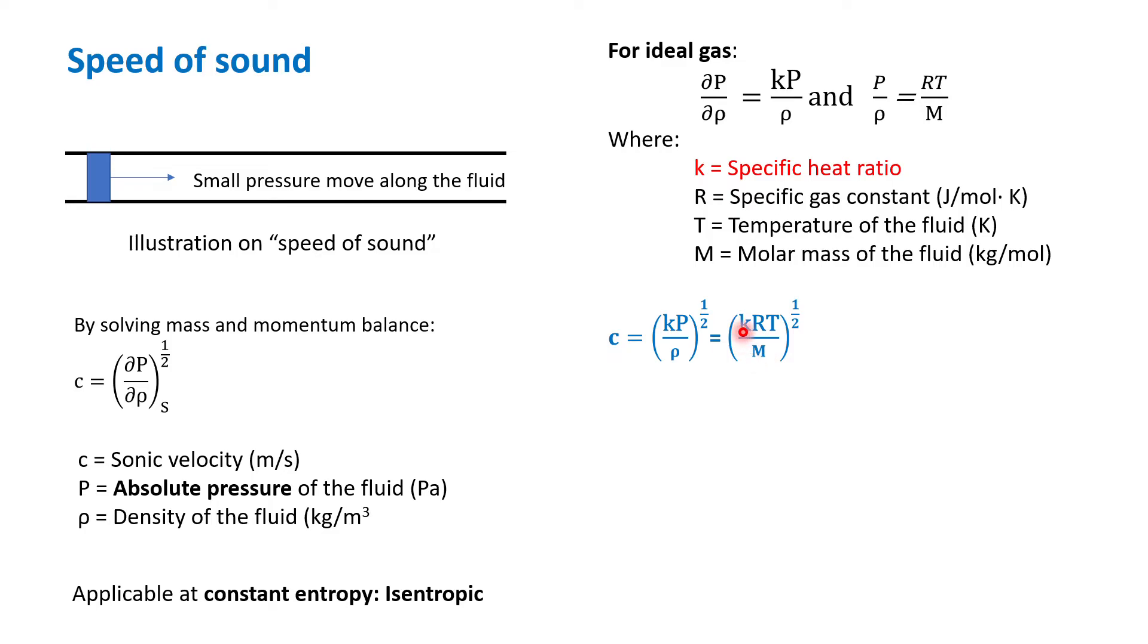K is the specific heat ratio, and it is also defined by the temperature. In another equation, you see that k represents the materials, P is the pressure condition, and the density is also the condition of the materials and the material itself.